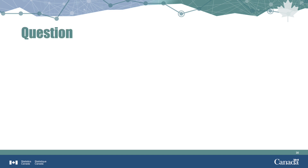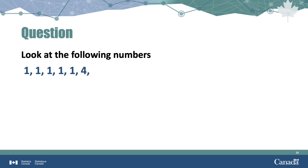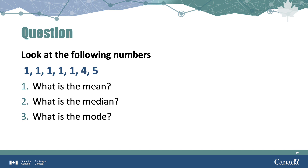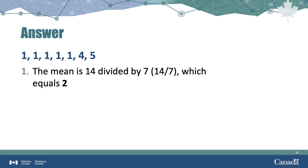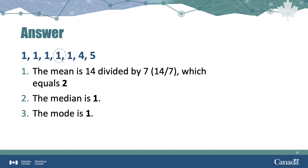Now it's your turn. Look at the following numbers: 1, 1, 1, 1, 1, 1, 4, and 5. Take a moment to determine the mean, median, and mode. To calculate the mean, we sum the digits: 1+1+1+1+1+1+4+5 equals 14. There are 7 numbers, so the mean is 14 divided by 7, which equals 2. The median is the middle number in the dataset; with 3 ones on the left and 1, 4, and 5 on the right, a 1 remains in the middle, so the median is 1. There are 5 ones but only one 4 and one 5, therefore the mode is also 1.